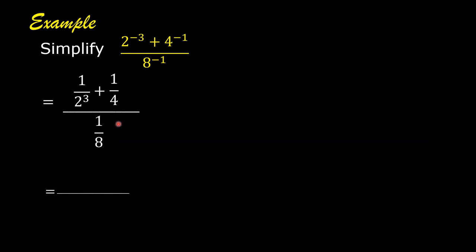Then we simplify 1 over 2 cubed. 1 over 2 cubed is 1 over 8, plus 1 fourth, divided by 1 over 8.